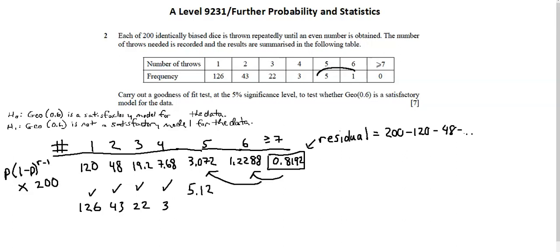And as I've combined categories 5, 6, and 7 plus, I'll combine the actuals as well. 5 plus 1 plus 0 is 6.